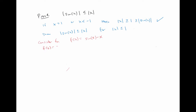Notice that f of zero is sine of zero minus zero, so that's zero. And also f prime of x is cosine of x minus one, which is always going to be less than or equal to one minus one, or zero, since cosine of x is always less than or equal to one. So in other words, we have a function that's zero at the origin and it's always either flat or decreasing.